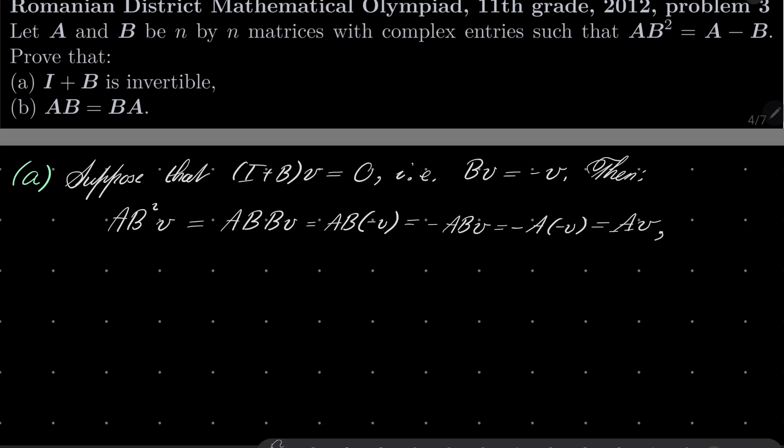And on the right-hand side, we have A minus B. A minus B times V is AV minus BV, which is AV, BV is minus V. So it's minus minus V, so it's AV plus V.